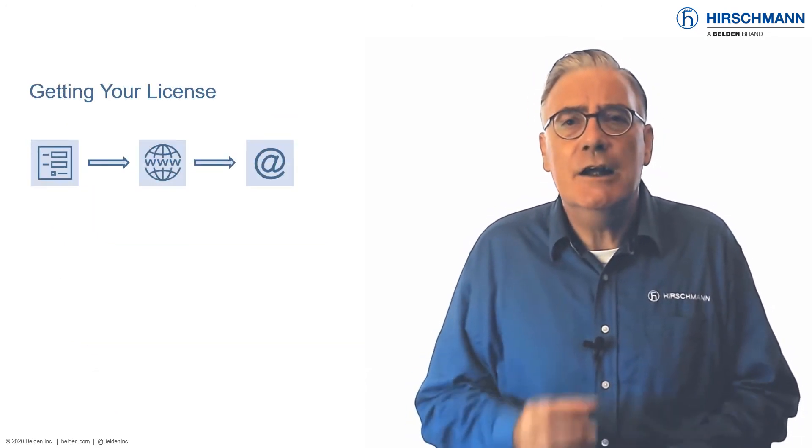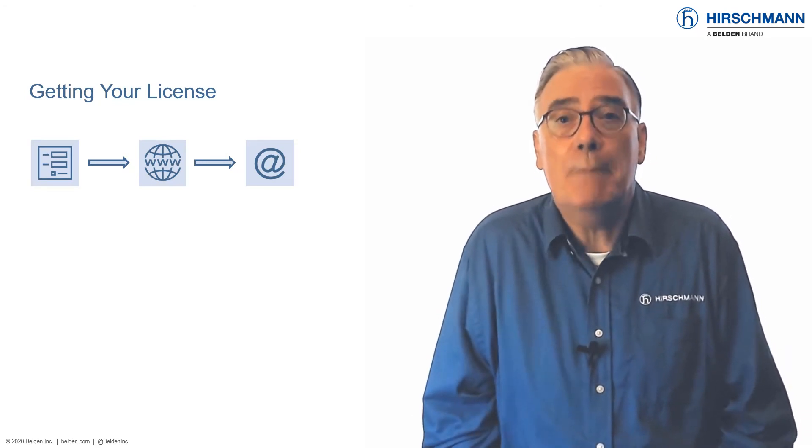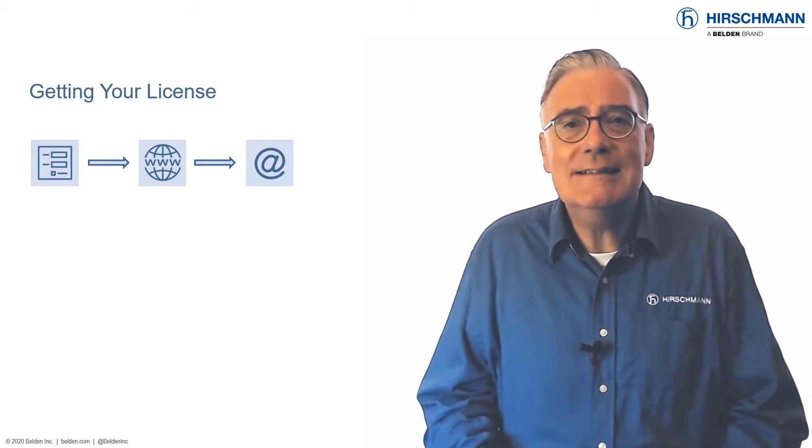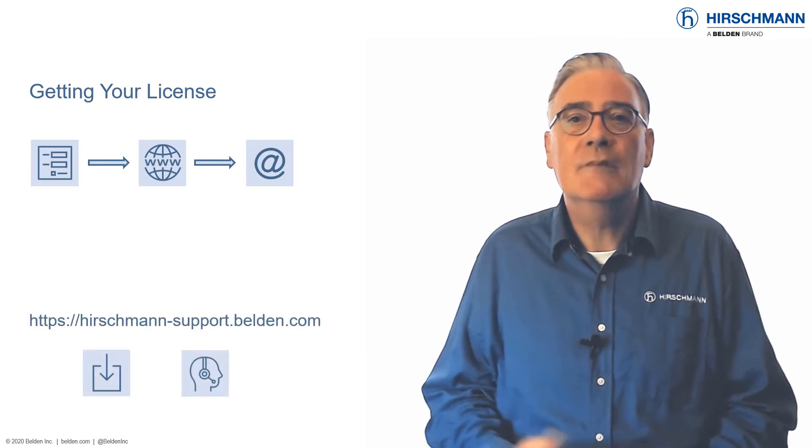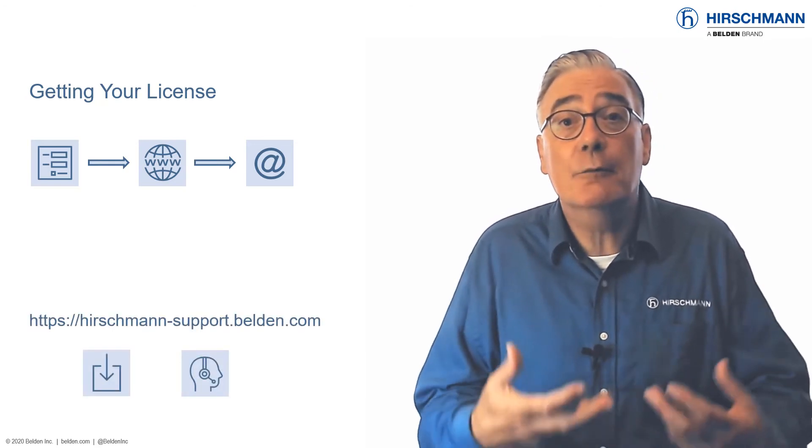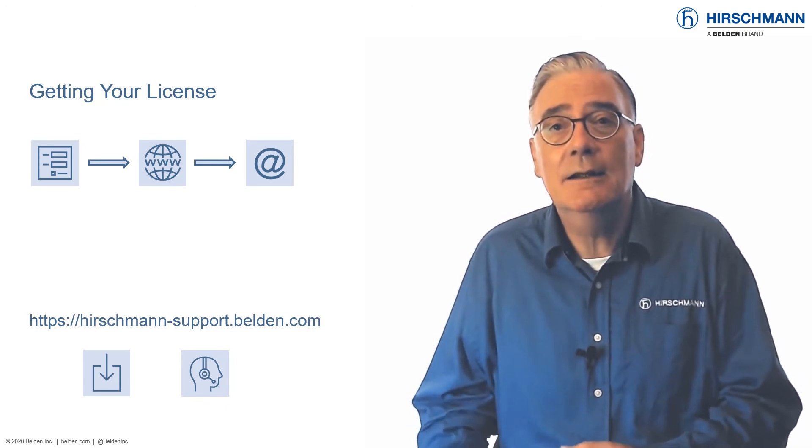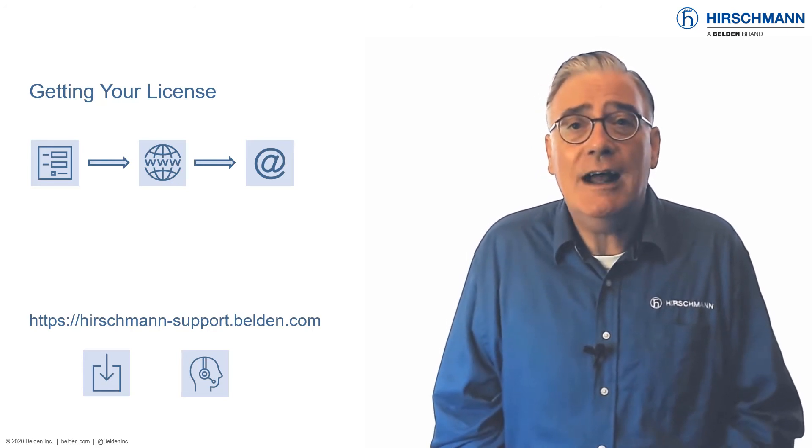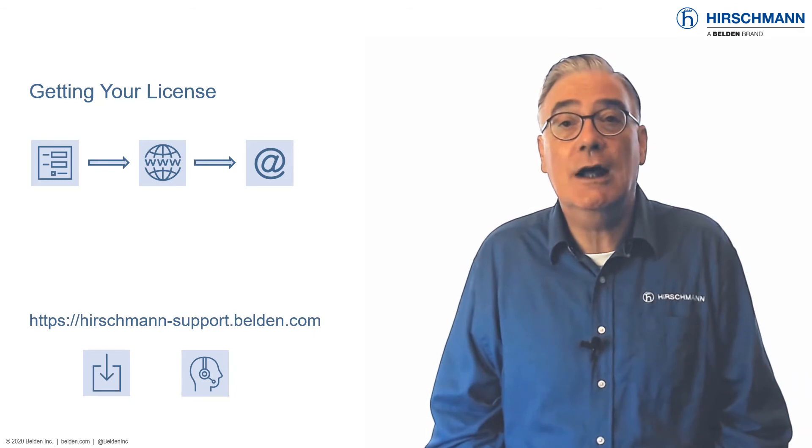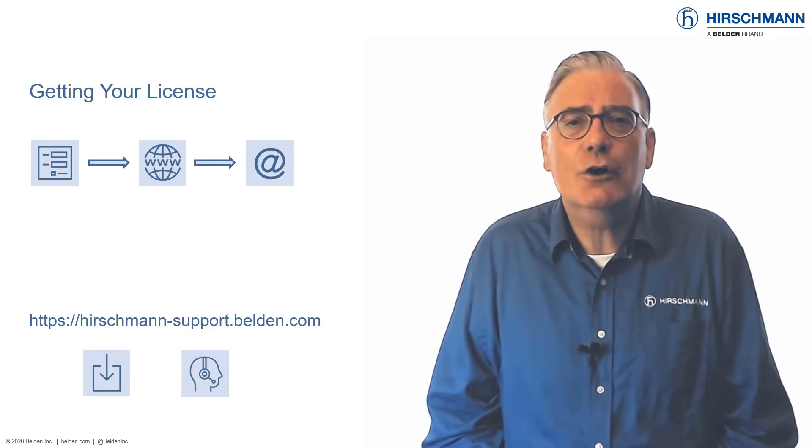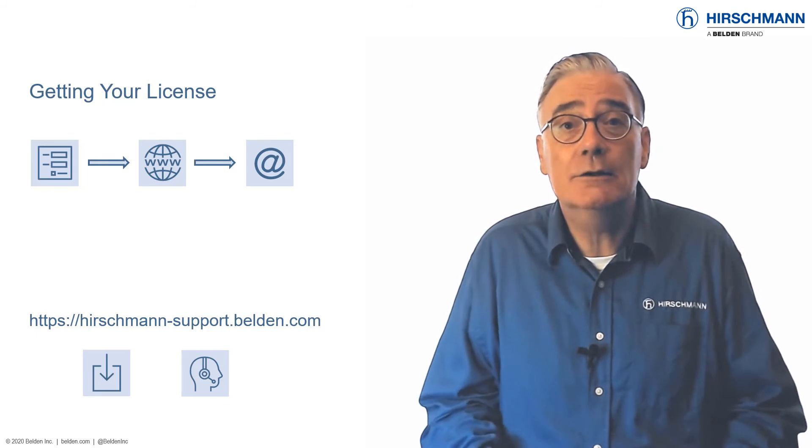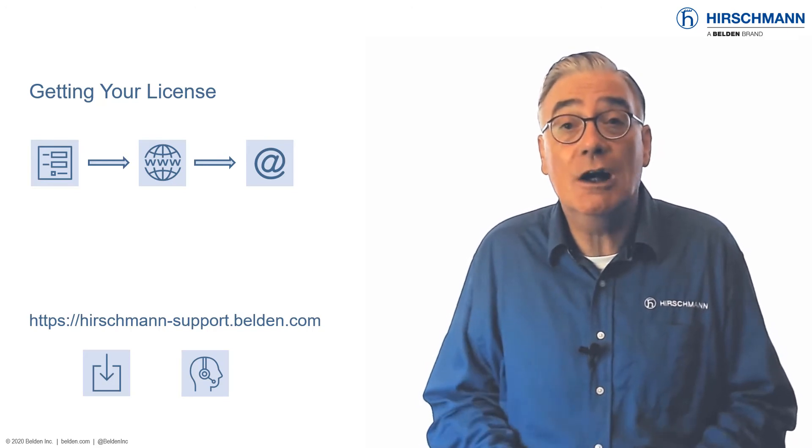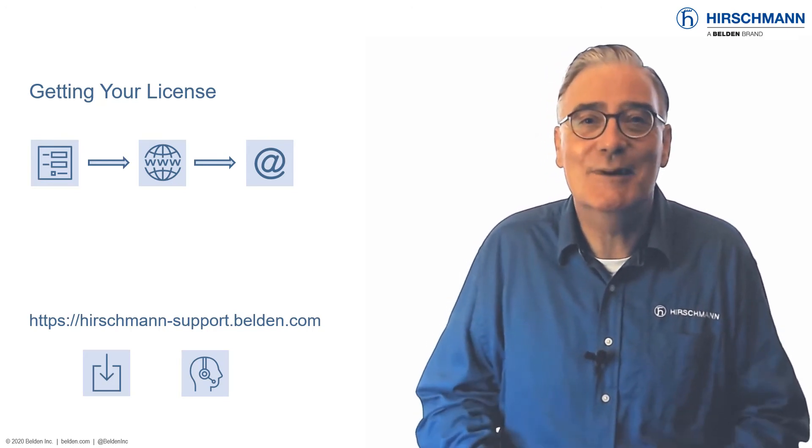To get started, just fill out the short form on the Belden website. You can find the link in the text below. Your license key will be emailed to you. Industrial HiVision can be downloaded from the Hirschman Technical Support website. Here you'll find all software offered by Hirschman. Industrial HiVision is located in the Download section under Tools. You will need to create an online account to log in to the support website. This same account can later be used to get free of charge technical support for Hirschman products.